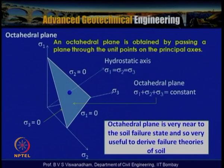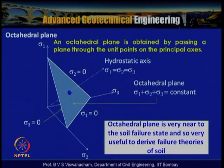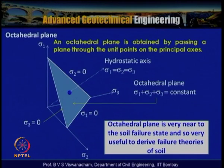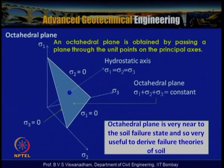The octahedral plane is obtained by passing a plane through the unit points on the principal axes, and the hydrostatic axis is σ₁ = σ₂ = σ₃. The octahedral plane is very near to the soil failure state and so is very useful to derive failure theories of soil.